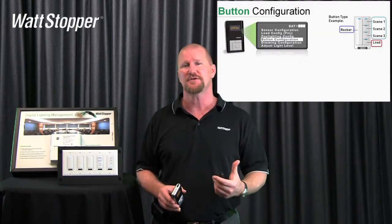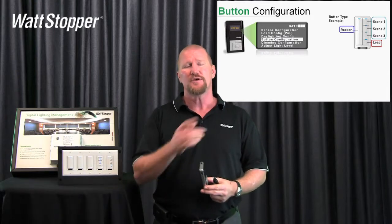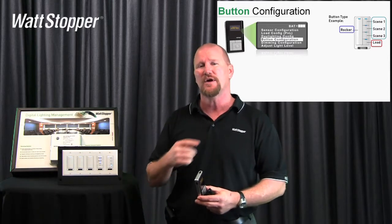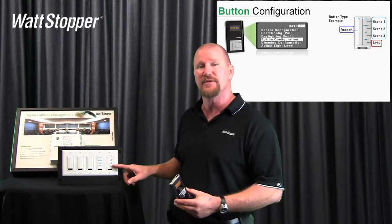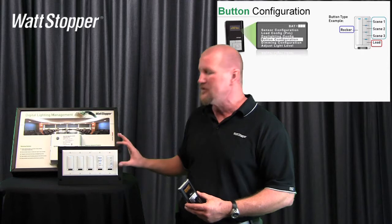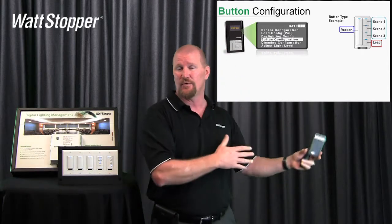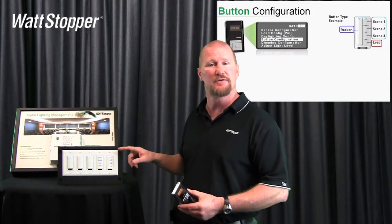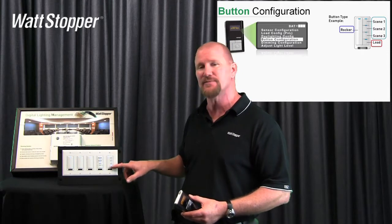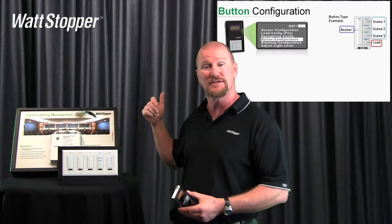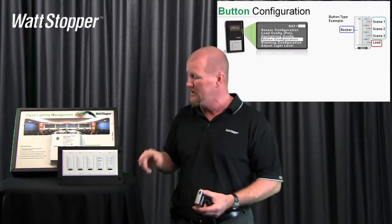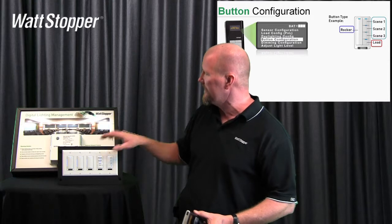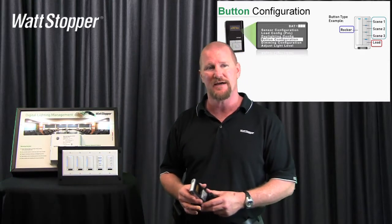For button configuration, you can see we have three basic button types: the rocker paddle, the scene button, and the load button. Here's an example where I've taken a scene switch and reconfigured the bottom button to be a load button. I use this a lot in classrooms at the teaching wall where the whiteboard is — we use this as the teacher switch. We'll often leave the first three buttons as scenes for general, AV, and quiet time, then turn the last button into a load button bound to the whiteboard, since the whiteboard is an on-off only load. This gives the teacher control of the whiteboard. Hitting all-off turns off the whiteboard; hitting all-on turns on all lights including the whiteboard.